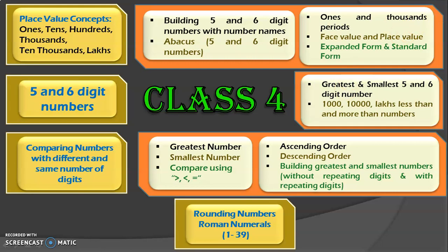Let us see what we are going to cover under comparing numbers. We will be seeing comparing numbers with different and same number of digits. First, we will learn how to identify the greatest and smallest numbers by comparing them and by putting the appropriate symbols — greater than, less than, and equal to. Then, we will learn to write numbers in ascending order, descending order, and also build greatest and smallest numbers both with and without repeating the digits.